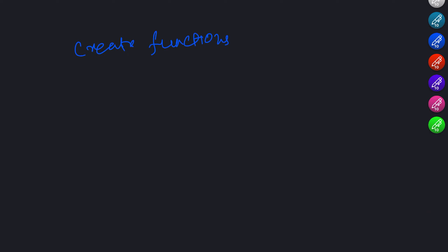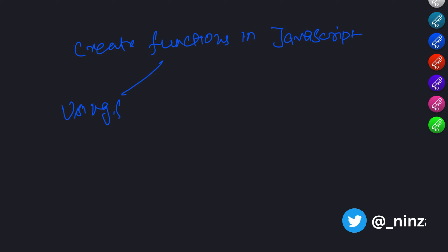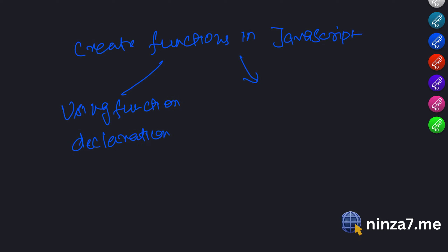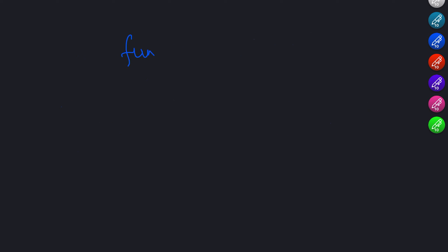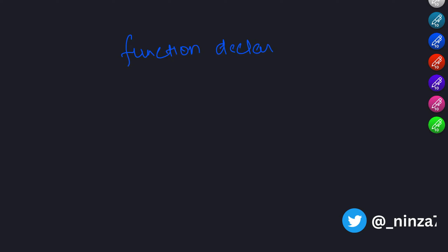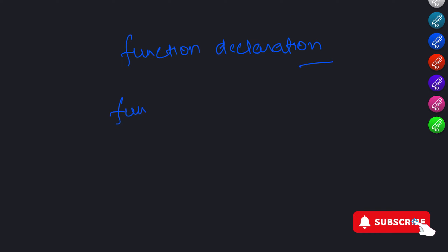There are two main ways to create functions in JavaScript: function declarations and function expressions. Let's start with function declarations. A function declaration is like a blueprint for a function. You use the function keyword followed by the name you want to give your function, and then a set of parentheses and curly braces.